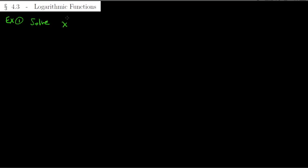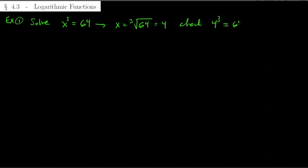Suppose you have x to the power 3 equals 64. If you want to know what x is, you want to undo the 3 — you want the inverse of the cube function, which is the cube root function. So you take the cube root of 64 and you get 4. You can check: 4 to the power 3 is 64, so 4 is the solution. You've all done this before — this is nothing new.